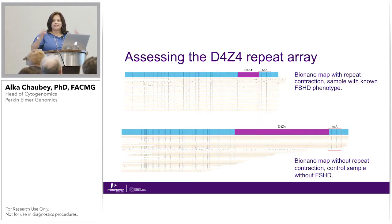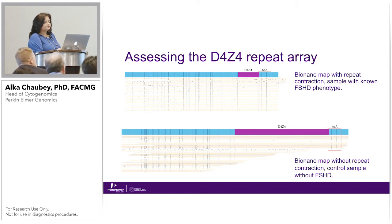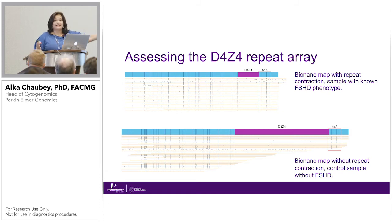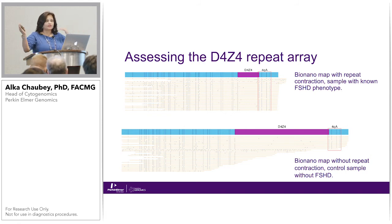We can also get a usable clinical report with images that everyone can understand for this complex disorder. You can see the normal chromosome 4 locus with the D4Z4 repeat — this is non-contracted — and this is the contracted allele. Everyone can see the contraction. It's very visual. I'll show you a case in our validation with a mosaic profile where the contractions and repeats are just screaming in front of your eyes — it's that easy.